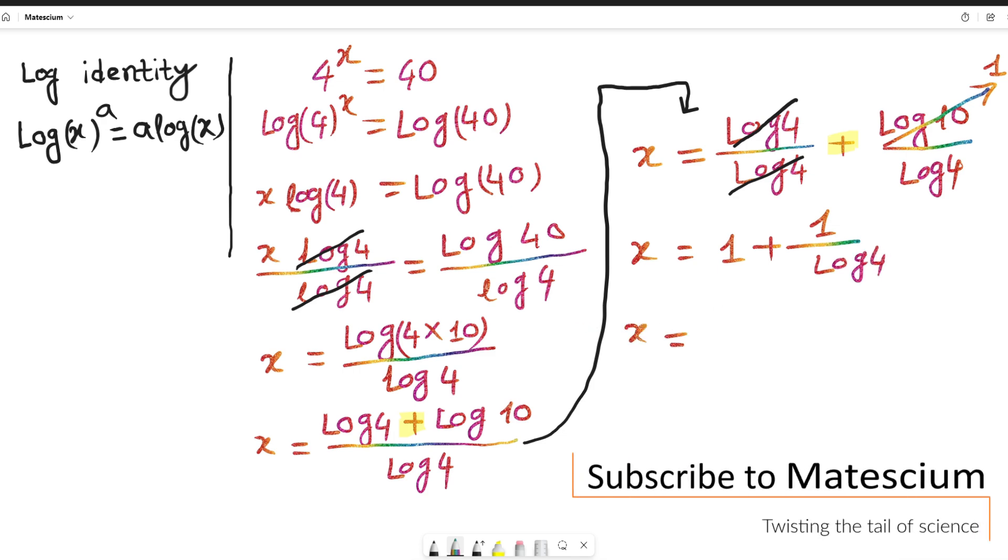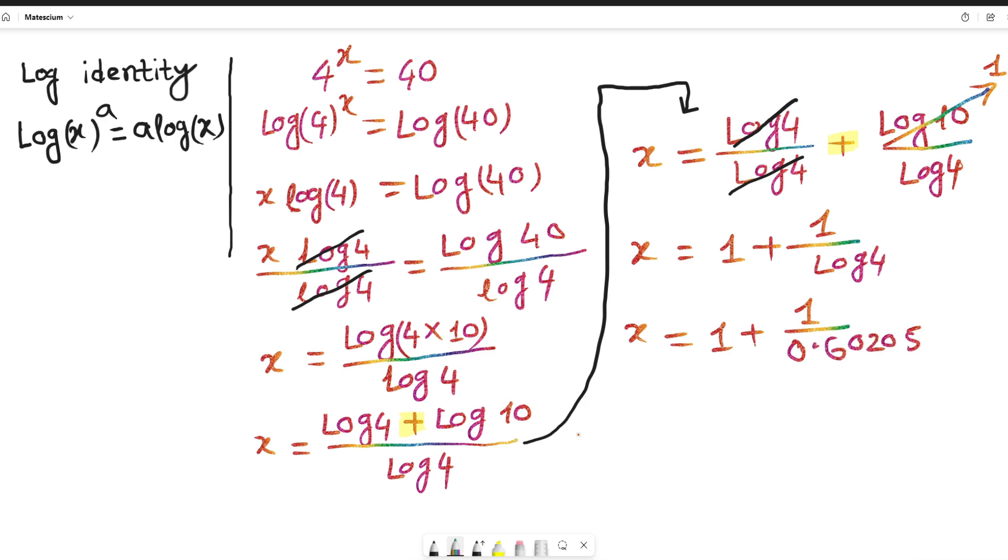Now you have to use the calculator. 1 plus 1 over log 4. What is the value of log 4? It is 0.60205. If you use your calculator at this stage of calculation, you will find the value of x is equal to 2.66. Yes, 2.66 is the answer of this entire teeny mini mathematical problem.